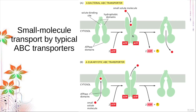For the ABC transporters, similar to the previous transporter, the binding of different solutes triggers conformational changes. There are two types: the bacterial ABC transporter and the eukaryotic ABC transporter. Although structurally similar, the difference is the direction of molecule movement — the bacterial transporter allows movement of solute molecules to the interior, while the eukaryotic ABC transporter moves small solute molecules to the exterior. This is usually found as a defense mechanism in cancer cells, where the small solute molecule being pumped out is more often than not your anti-cancer drug.